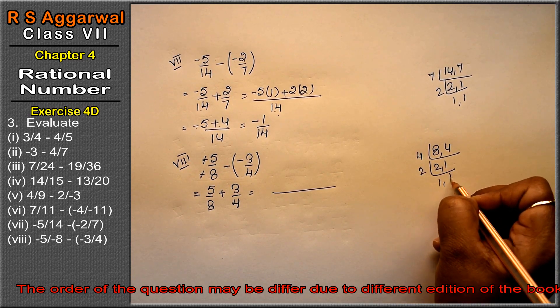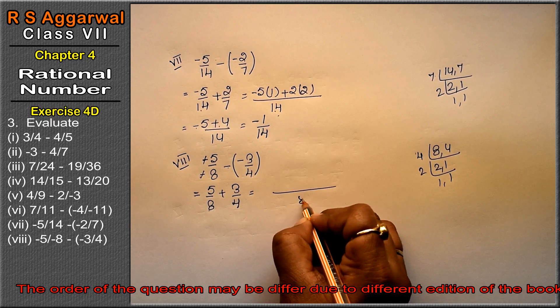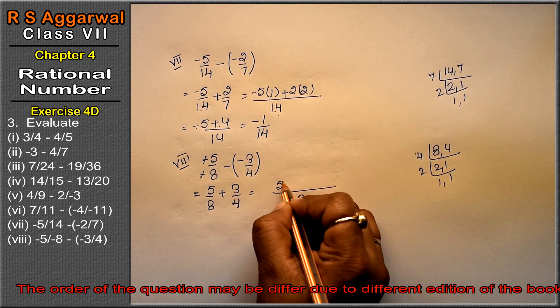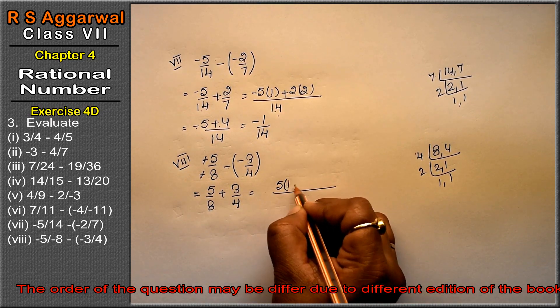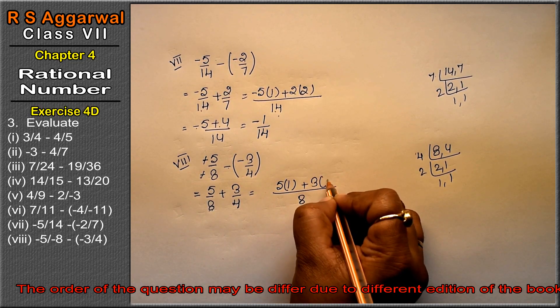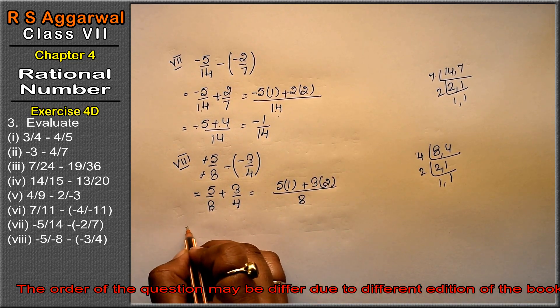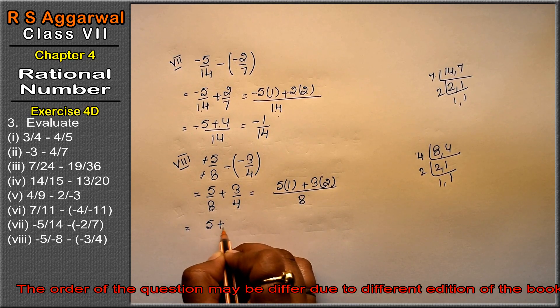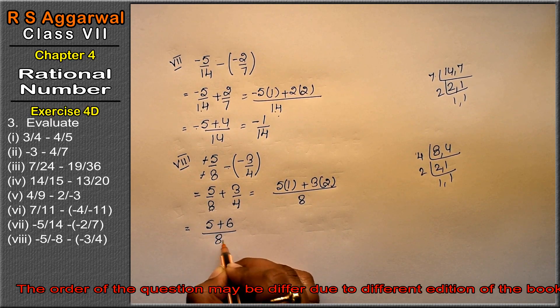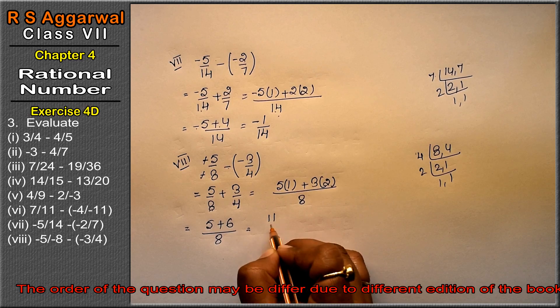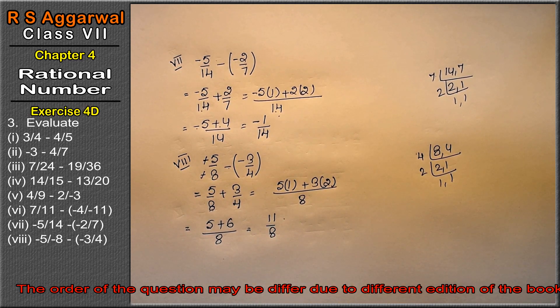So we have 5 times 1 upon 8 plus 3 times 2 upon 8. This gives us 5 plus 6 upon 8, which adds to 11 upon 8 as the answer.